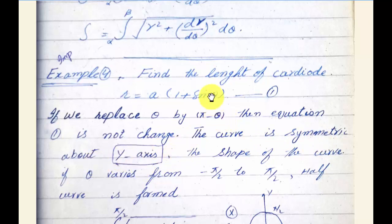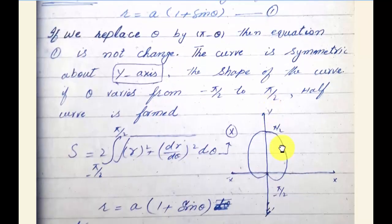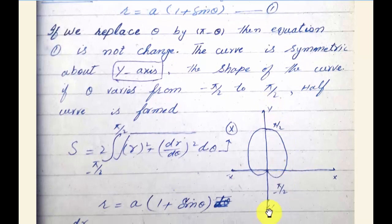Because of π - θ symmetry, if θ varies from -π/2 to π/2, half the curve is formed. Due to symmetry, we multiply by 2 and integrate from -π/2 to π/2.